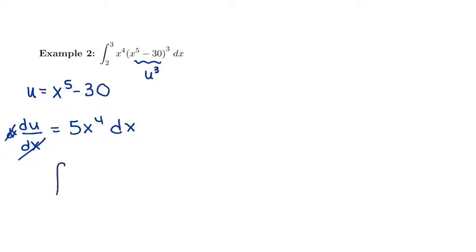And now I need to switch those x values of my bounds to be u values for my bounds. So my old bounds were from 2 to 3. So I need to put those into what I have solved here. u is going to be whatever x is raised to the 5th minus 30. So this first one I'm going to do 2 to the 5th minus 30 which is going to give me 2 for my new lower bound. 2 to the 5th is 32 minus 30 is just 2.